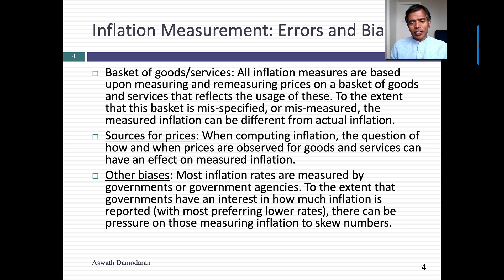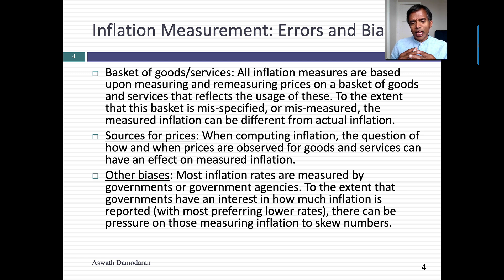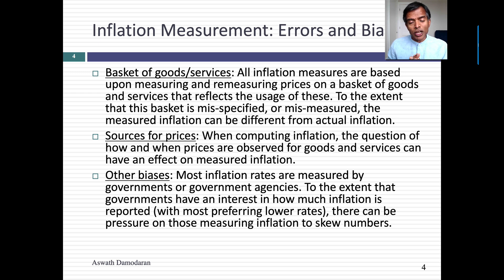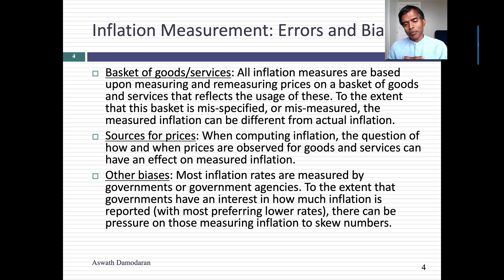One of the problems with that basket is that the basket itself is a shifting basket. Why? Because consumers might spend more or less on a good based on prices changing. As an example, in the 1970s, one of the problems agencies had measuring inflation was that the amount people were spending on gasoline was changing as they were tracking inflation. They kept the weight on gasoline consumption fixed for the initial periods, which meant that at least initially they were overestimating inflation. The basket of goods and services becomes critical, which means different services measuring inflation in the same country can come up with different measures depending on how that basket is specified.